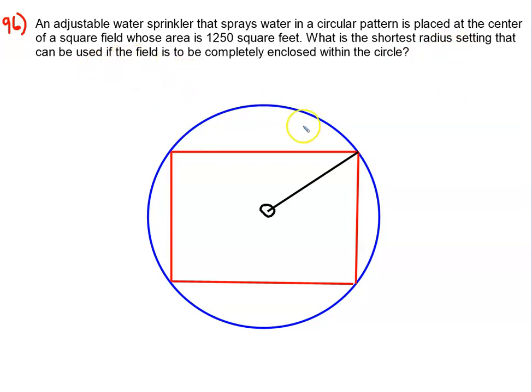We want to make sure that as we move around a circle, if our radius is too short, we would be doing something like this and it would not enclose the whole field. So we've got to make sure that we adjust it properly and use the proper radius.